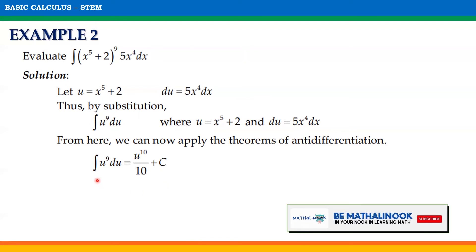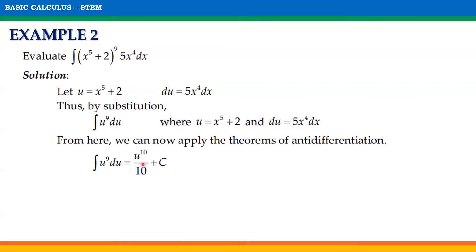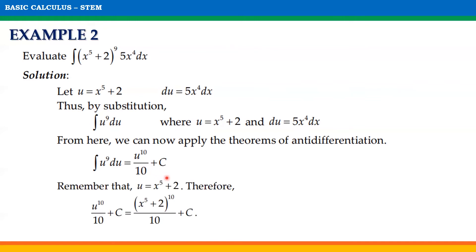We can now apply the theorems of anti-differentiation. The indefinite integral of u⁹ du will be equal to u¹⁰/10 + C. Thus, substituting back, we will have the final answer (x⁵ + 2)¹⁰/10 + C.